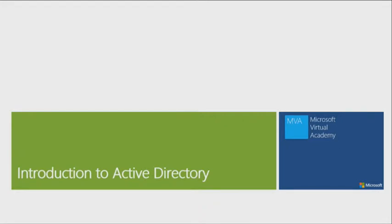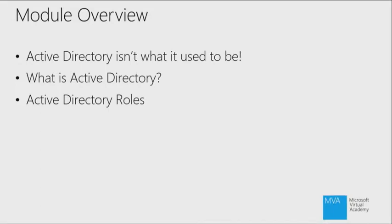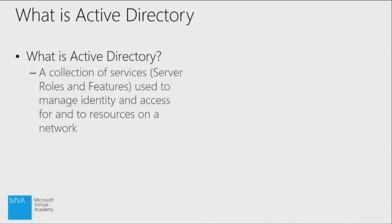We're going to jump right in with our introduction. This is an overview of those five roles provided by Active Directory. Active Directory isn't what it used to be. People to this day use the term Active Directory to define what is Active Directory Domain Services. What used to be Active Directory was that one specific service — the centralized management of users and computers across your IT organization. It has changed, and Active Directory now, as a definition, is a portfolio of technologies — a collection of services, server roles, and features used to manage identity and access for and to resources on a network.